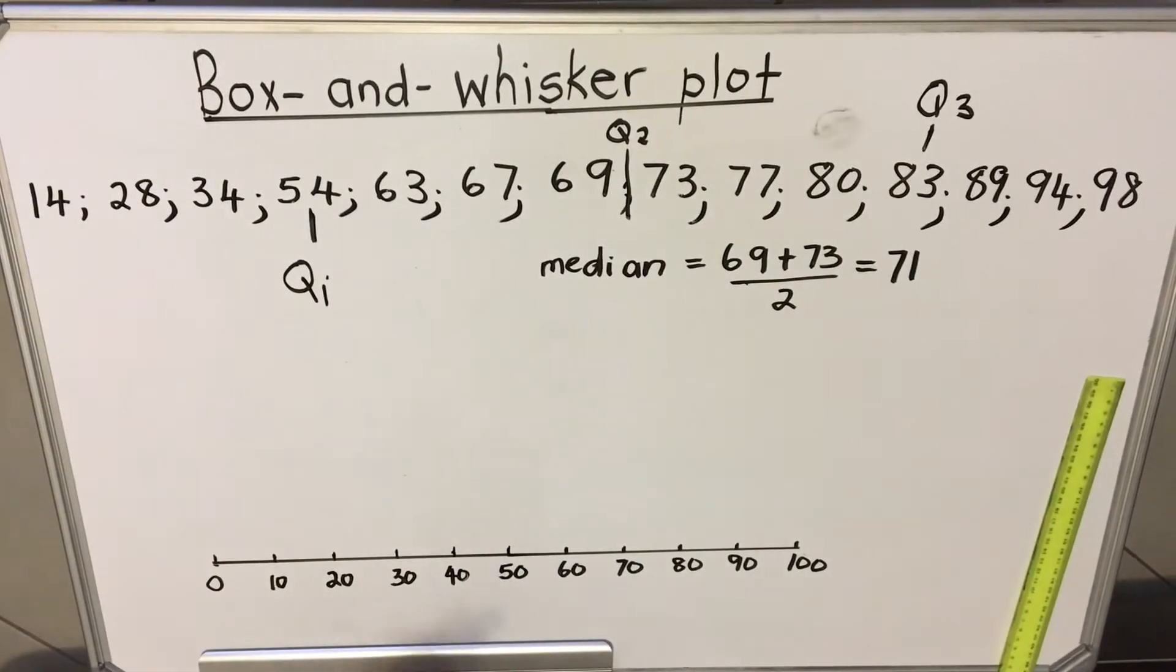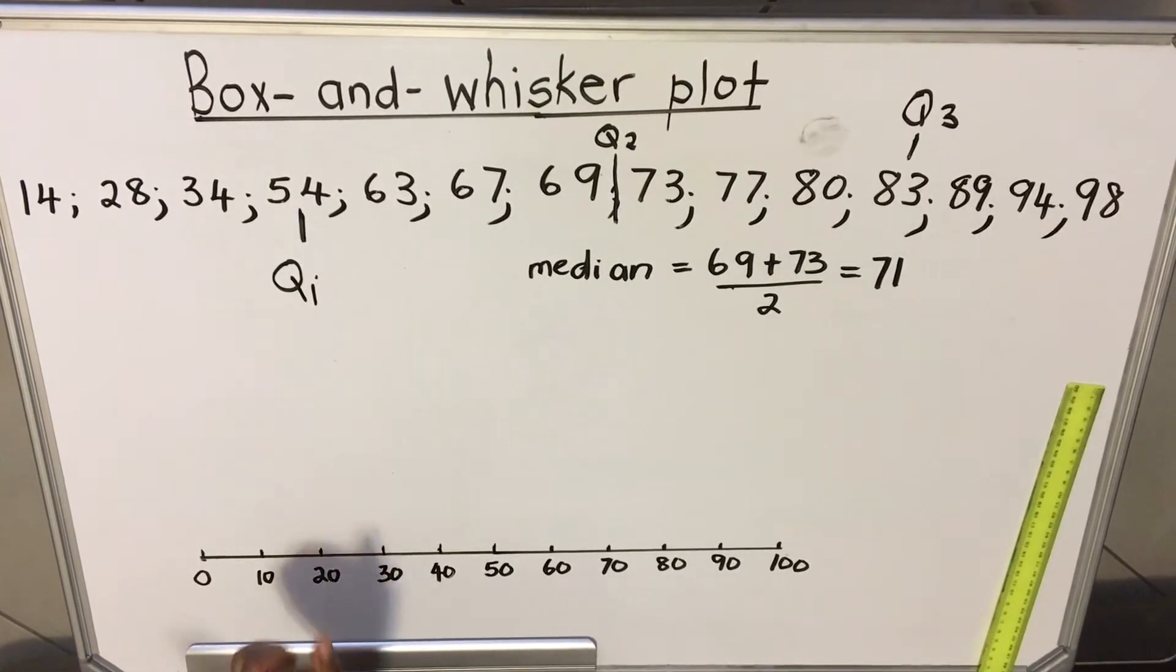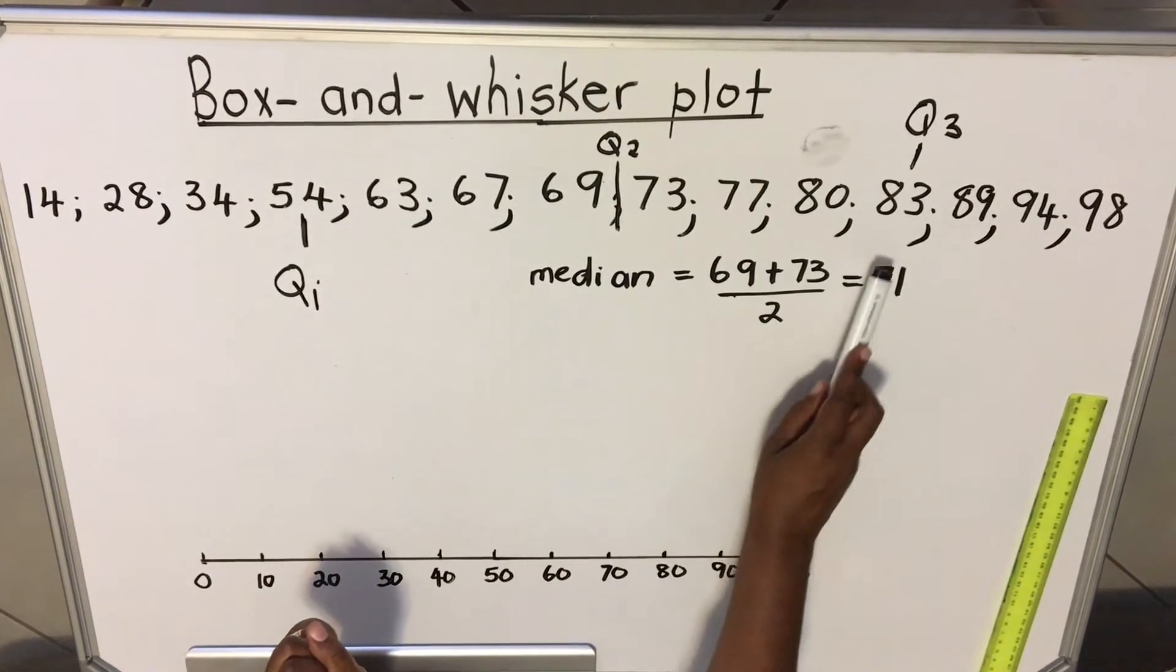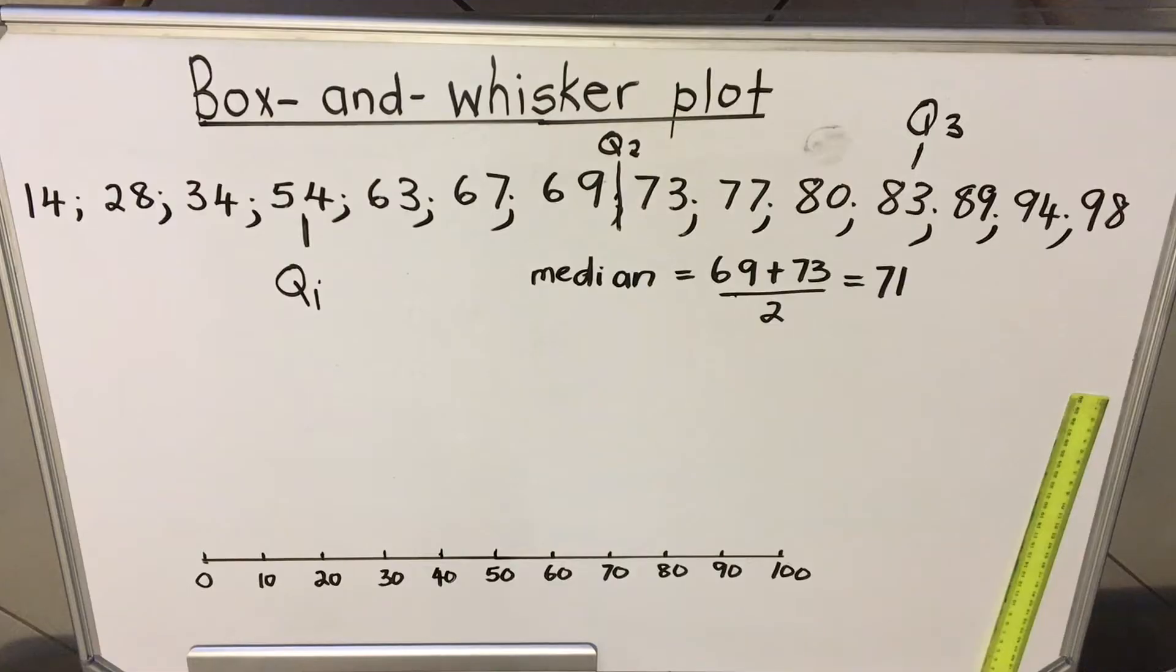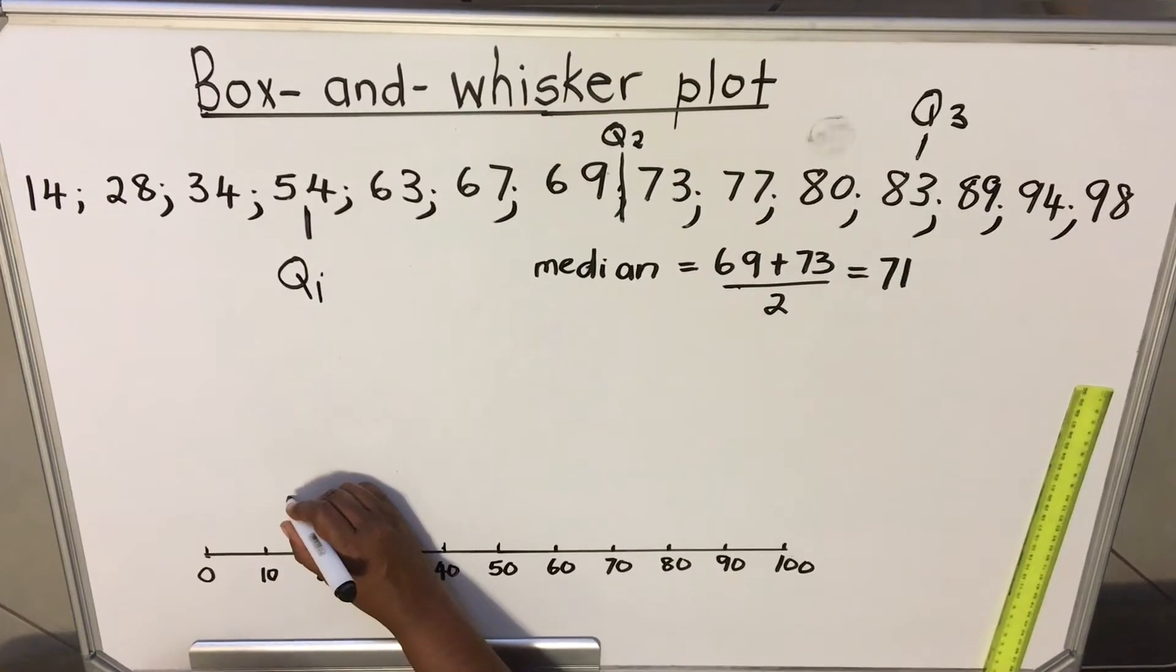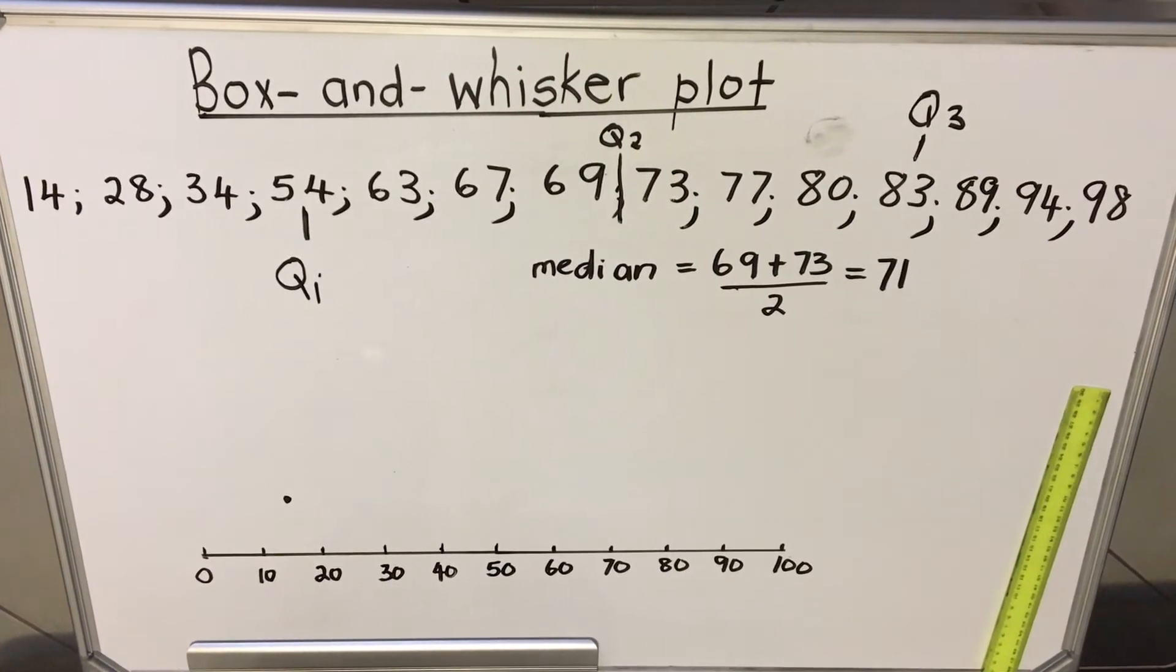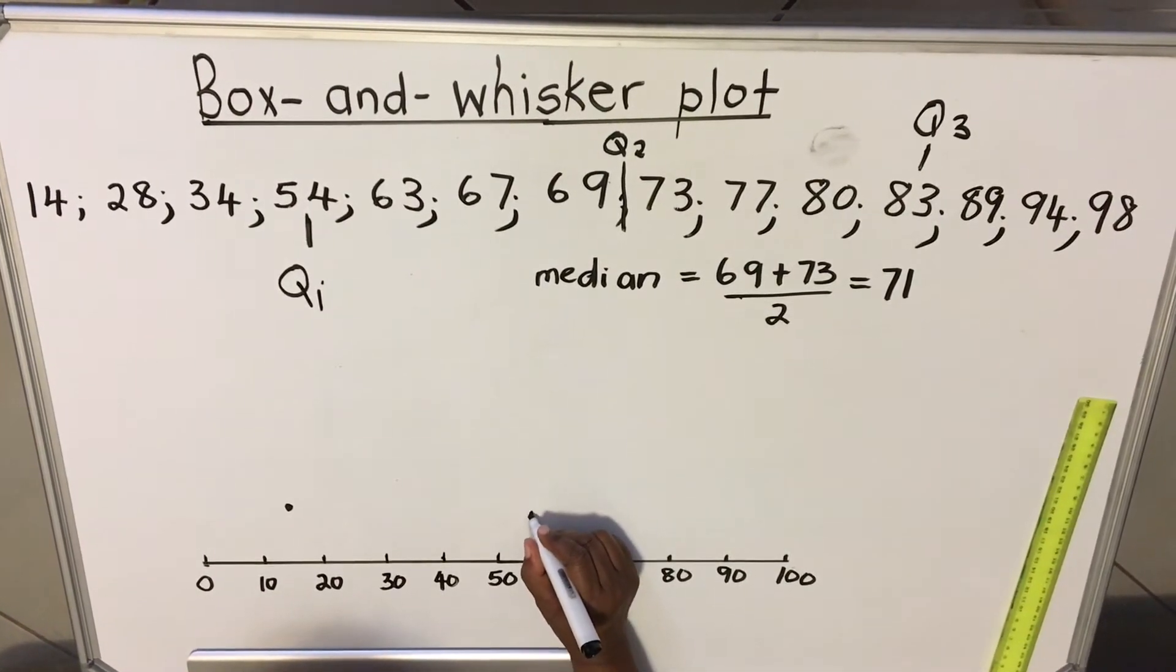Let's see how we draw a box-and-whisker using this. When we draw a box-and-whisker plot, we are using five values: the lowest value, Q1, the median, Q3, and the highest value. So our lowest value is 14. This is our 10, this is our 15. 14 will be around there. This is our lowest value. Our Q1 is 54. This is our 50. 54 will be around there.